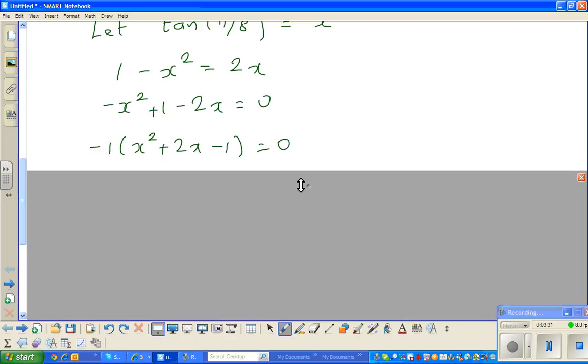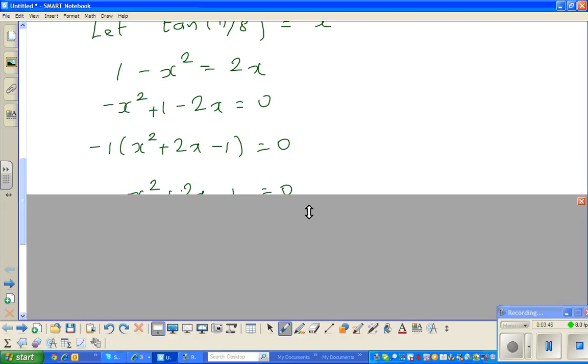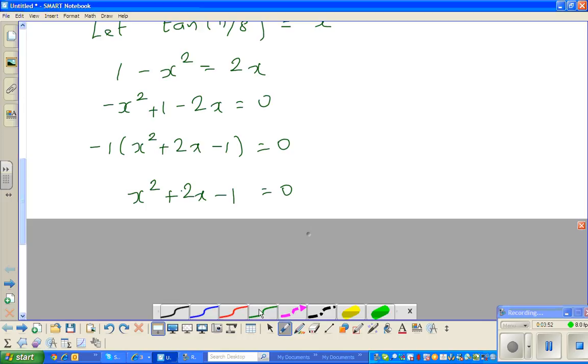So what happens is, I have factored out the negative 1. So minus x squared in the bracket became plus x squared. Minus 2x became plus 2x in the bracket and plus 1 became minus 1. The next step, I have divided both sides by negative 1. So if you divide this side by negative 1, you can also divide this side by negative 1. And 0 divided by negative 1 is 0.